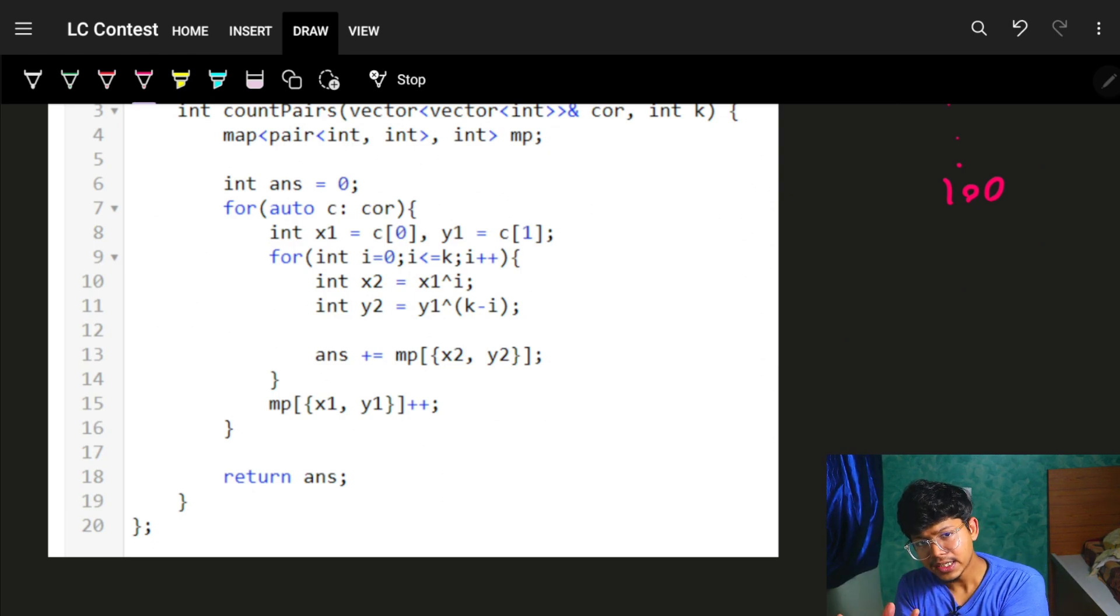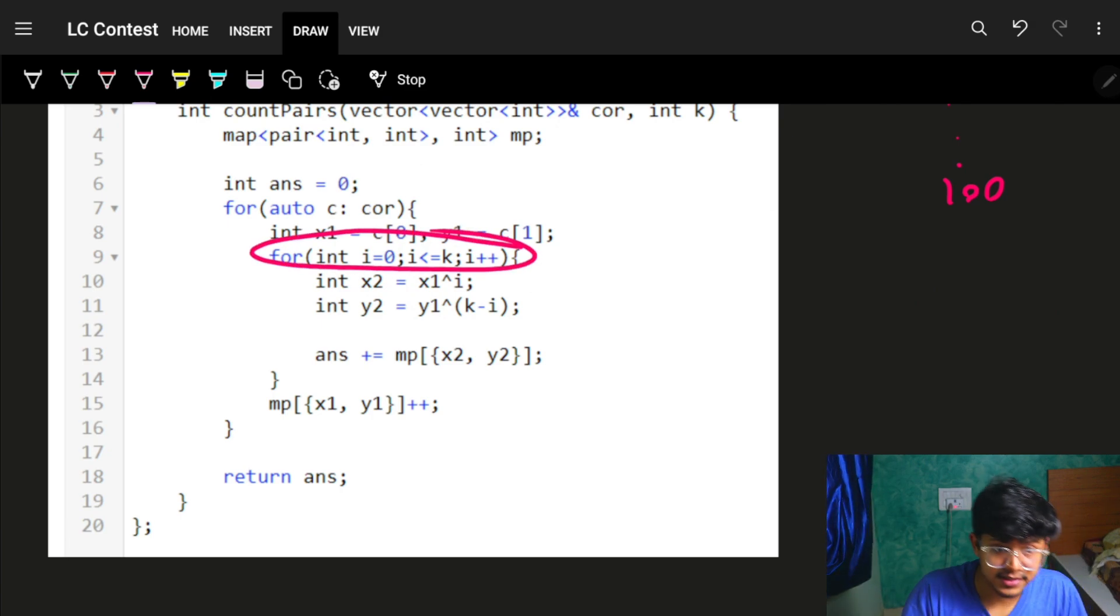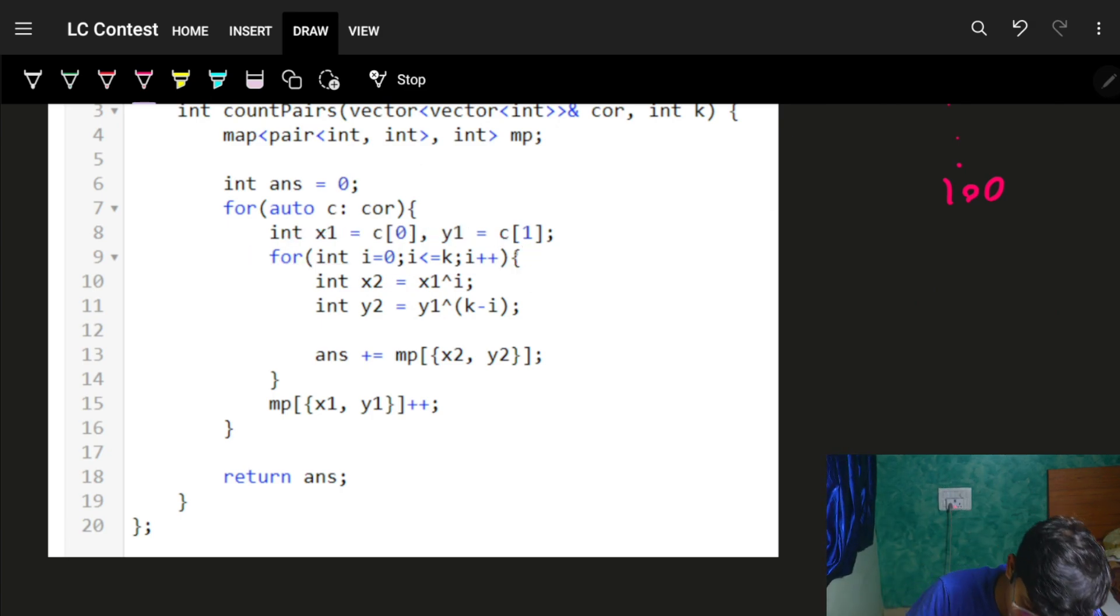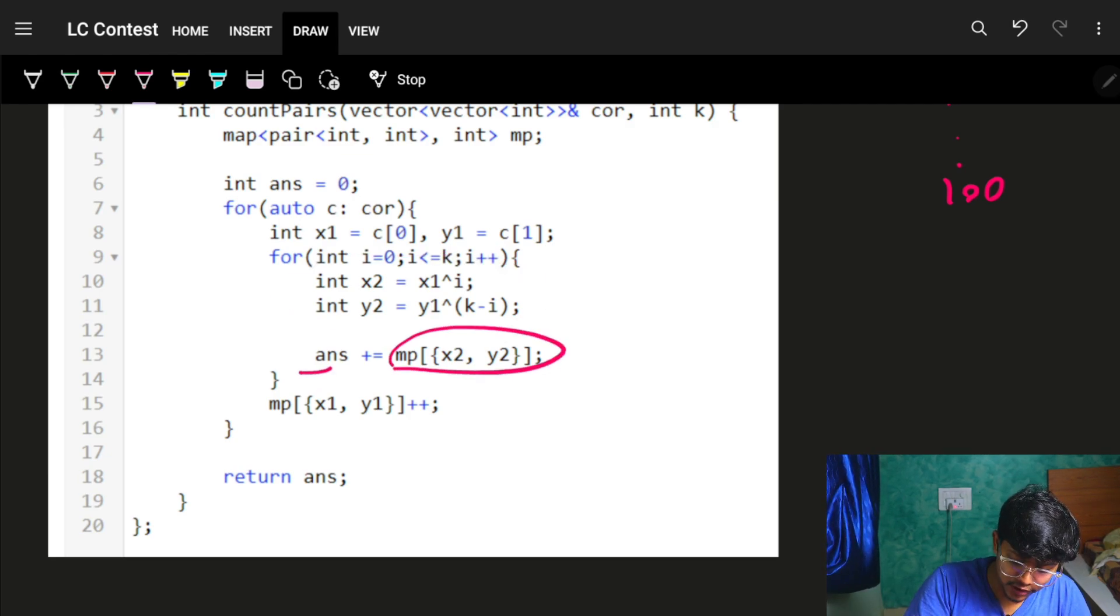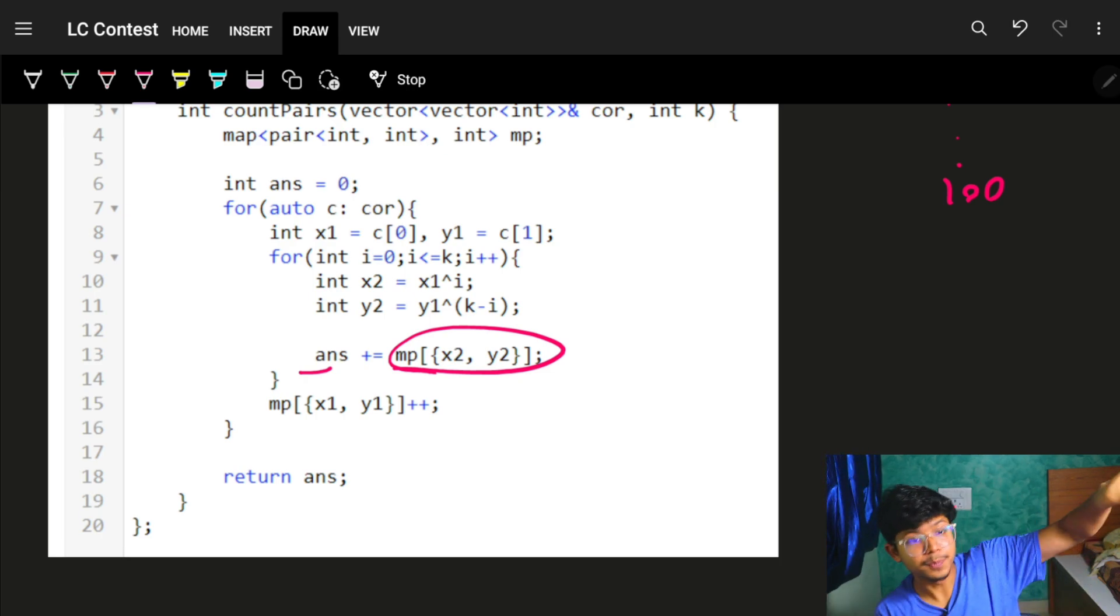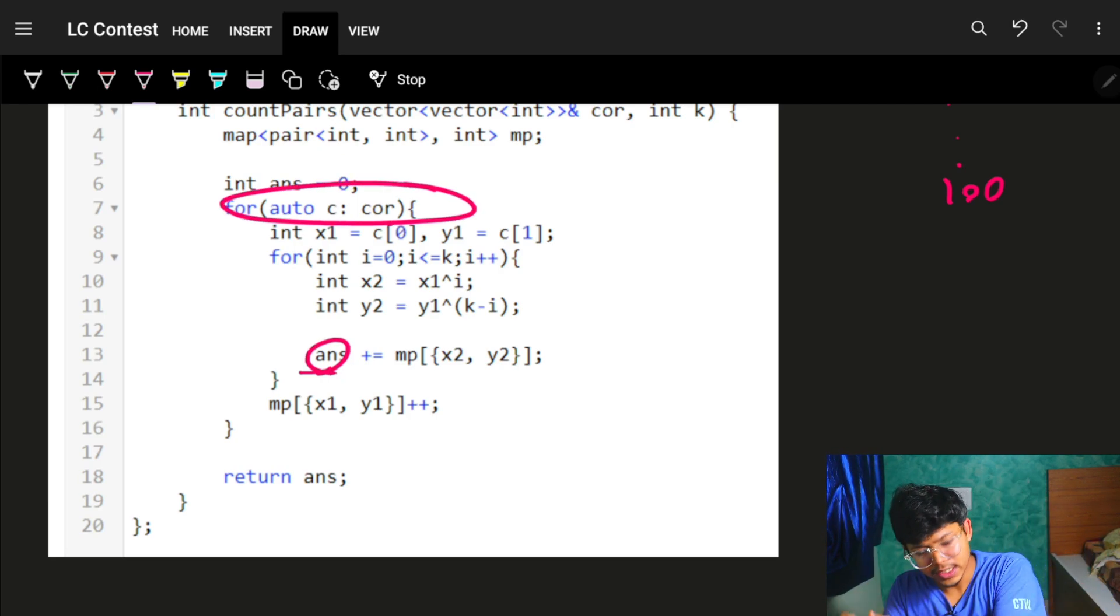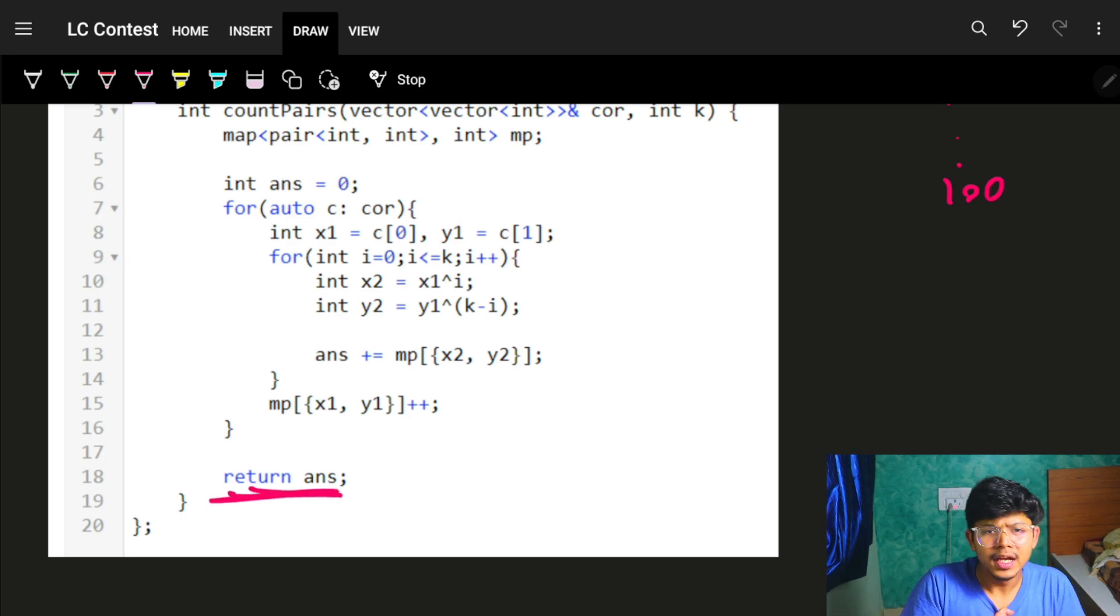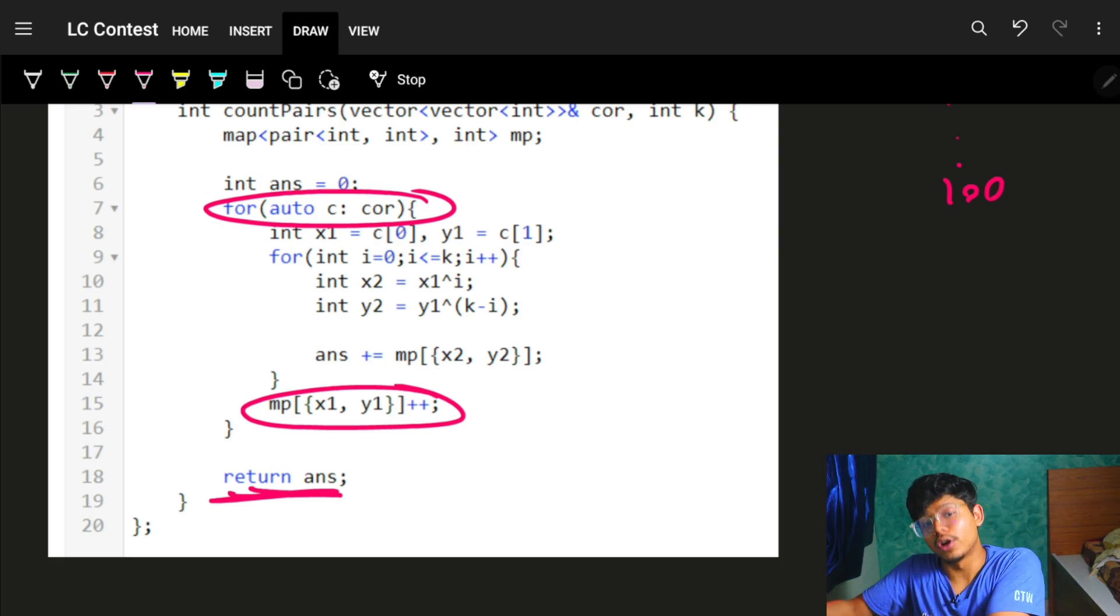I have one coordinate, I find the other. For all k's, which can be at most 101 combinations (0 to k), I find x2 and y2 using XOR with i and k-i. Once I've found x2, y2, I check how many such previous pairs exist in the map, increment my answer. I do this for all coordinates, and simply get the total answer. After processing each coordinate, increase its count in the map for the next coordinates.